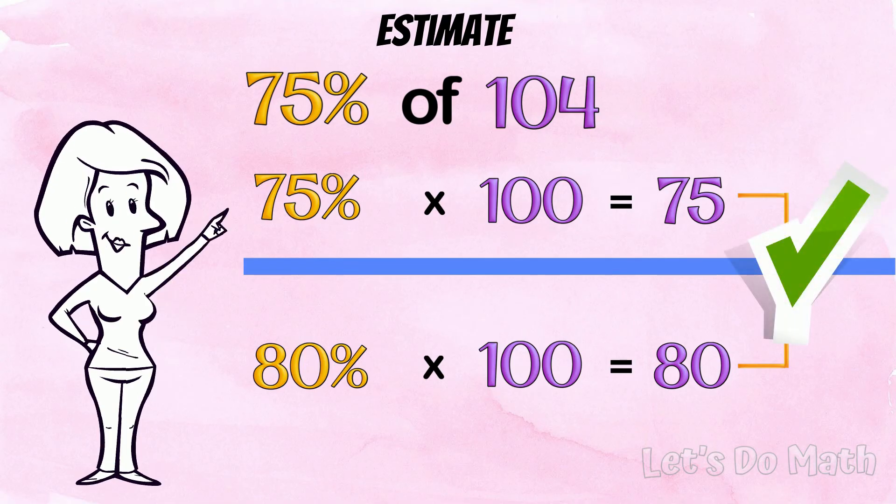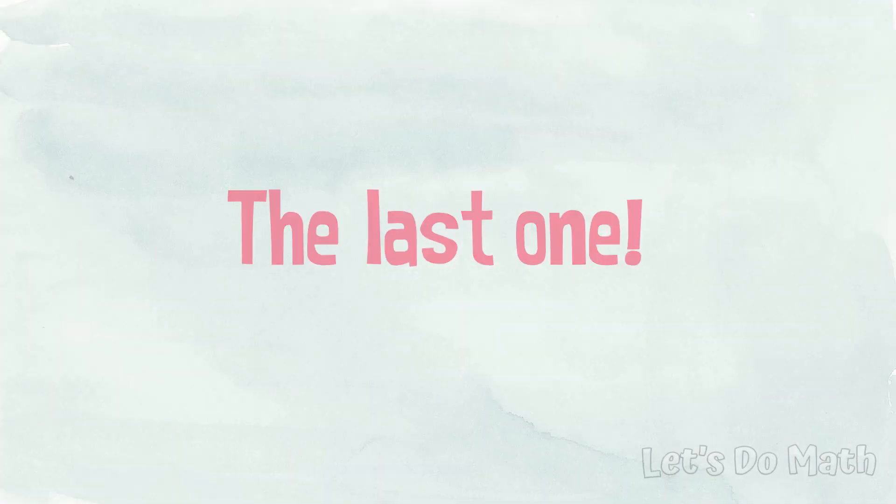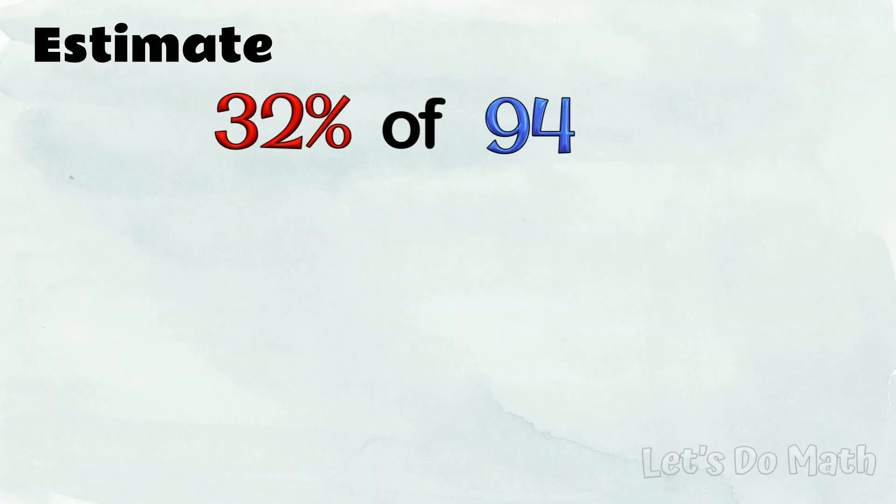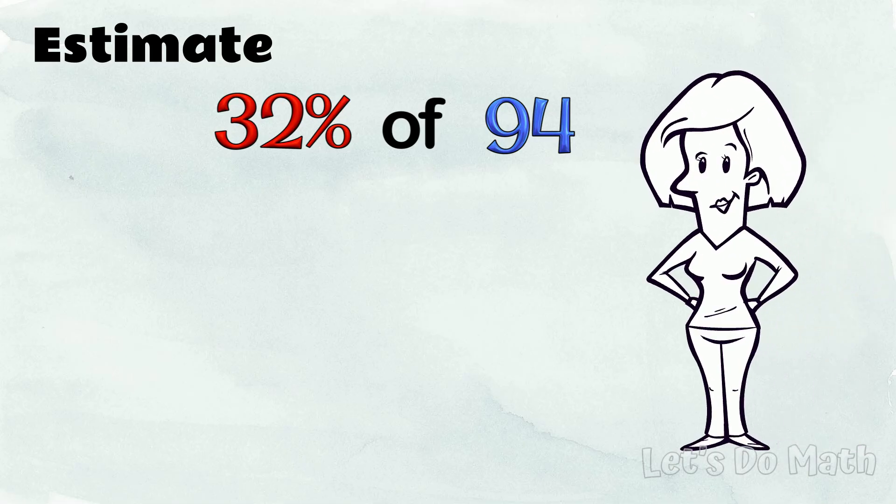But for this problem, I prefer the benchmark of 75% here. And for the last one in this set, we've got to estimate 32% of 94. They both round down. 32 rounds to 30. And 94 rounds to 90.